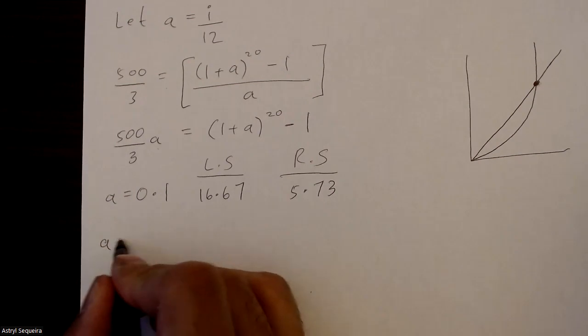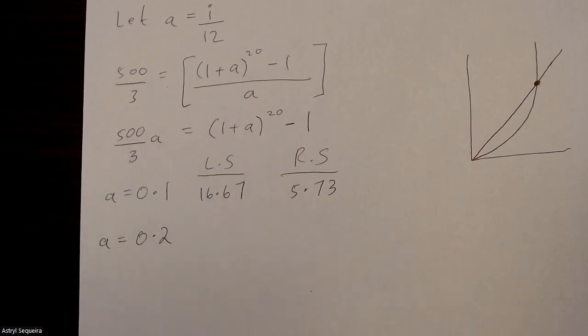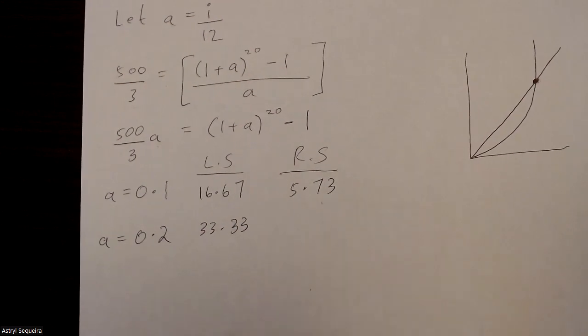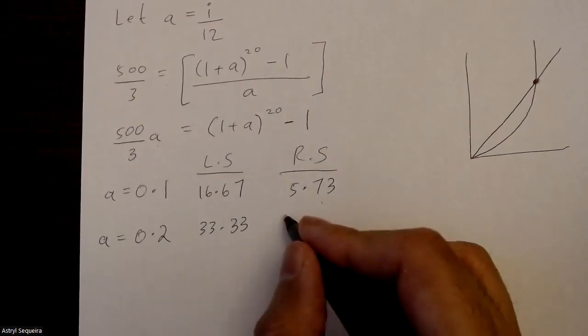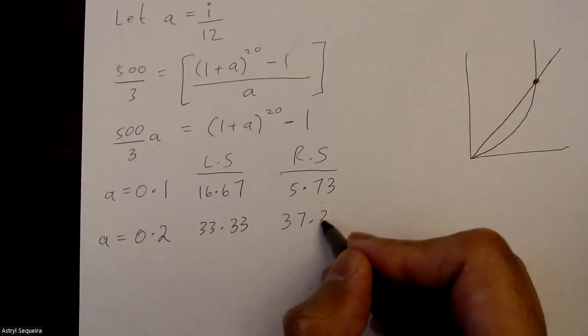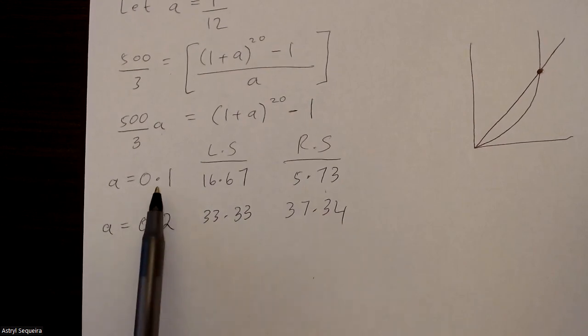Let's write a as 0.2, just to see if they get closer or further away. Let's sub an a on the left side over here, 500 over 3 times 0.2. I get 33.3. And if I sub it on the right side, I get 37.34. So now I notice they are much closer together, which means my solution is probably between 0.1 and 0.2, probably very close to 0.2.